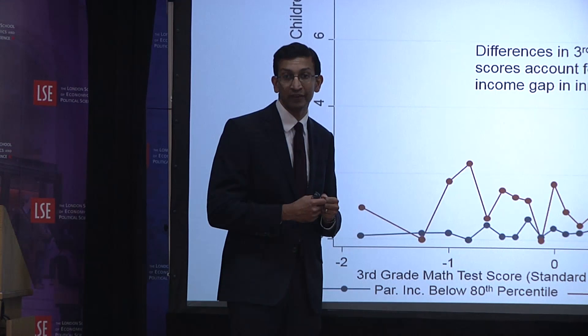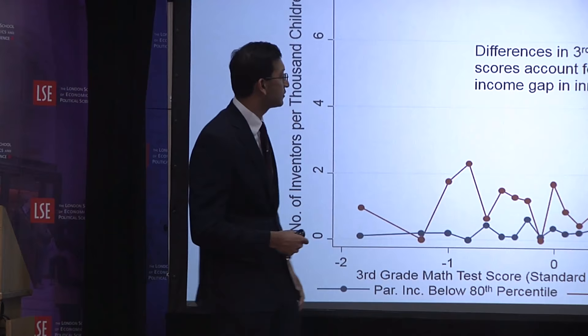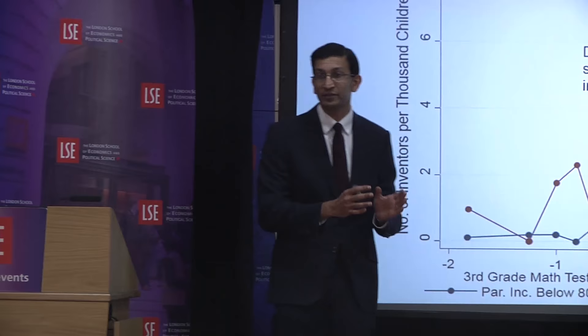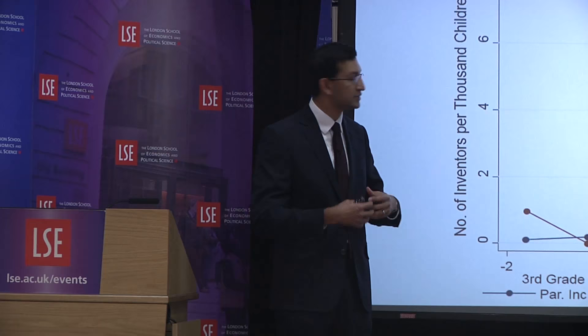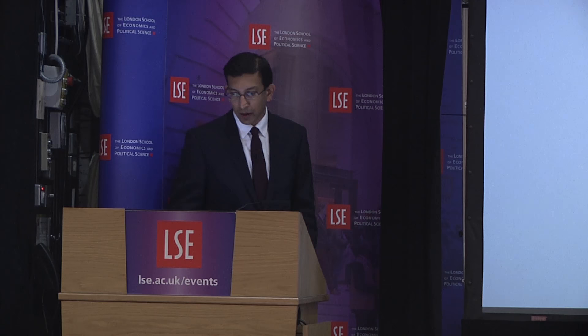That suggests not all of the gap in innovation between low- and high-income families can be entirely explained by differences in ability. When we condition on ability and focus on kids doing best in their third-grade classes, kids from high-income families still have significantly higher propensities to innovate, even conditional on that measure of ability. Quantitatively, differences in third-grade test scores account for about 30% of the income gap in innovation.